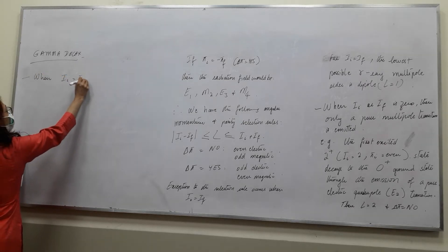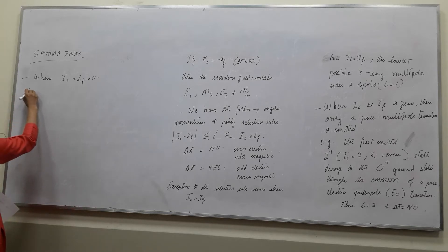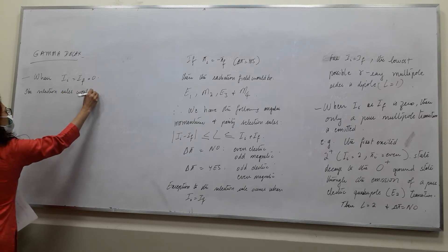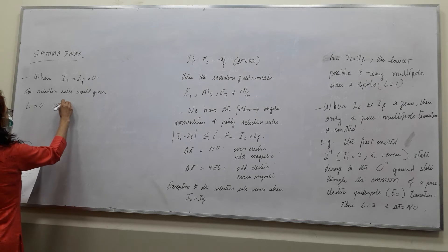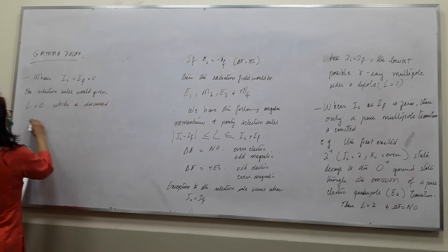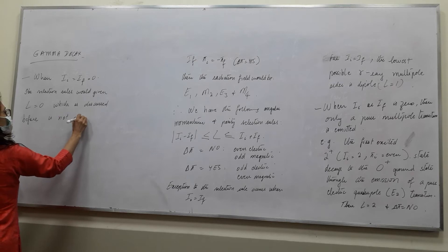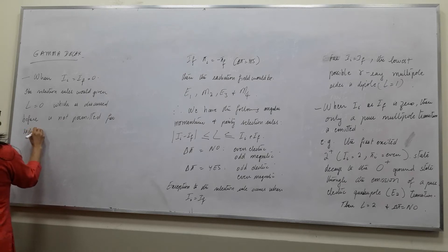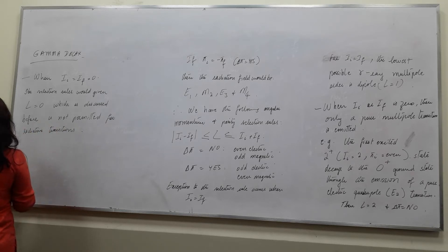When I with I is equal to IF is equal to 0, the selection rules would give L is equal to 0. This was discussed before. It is not permitted for radiative transitions — it is forbidden.